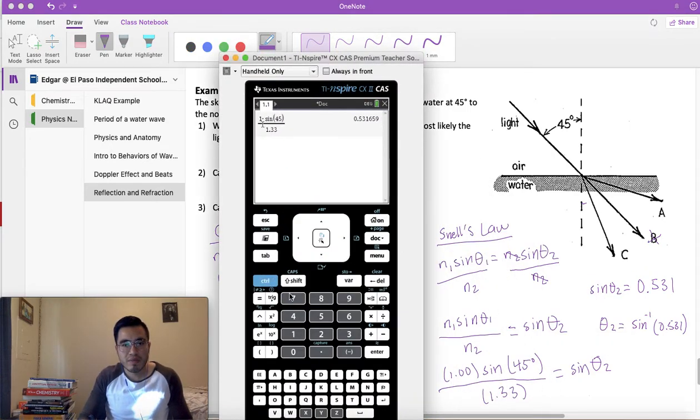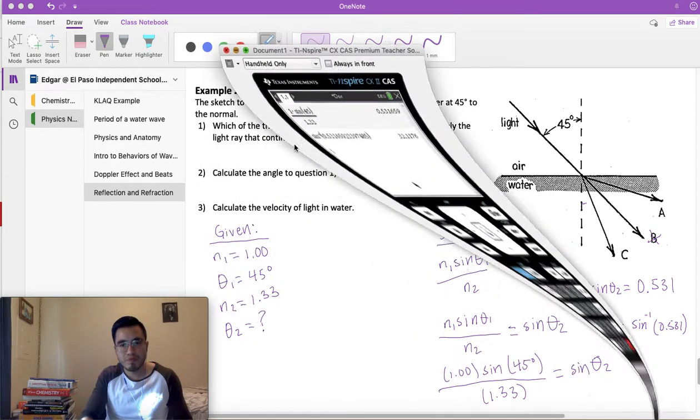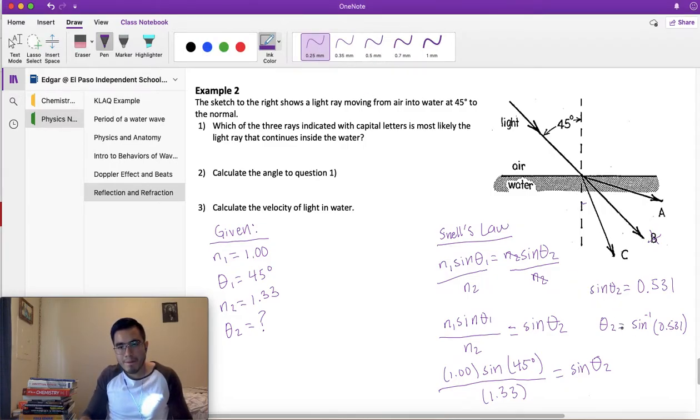So let's do that. Trig functions, you'll see it, sin^(-1). Instead of writing 0.531, I'm just going to select my previous answer by control ANS for answer. Press enter. 32.11. I'm just going to round to 32 degrees. θ2 = 32°. So I'm going to write my answers in blue. θ2 = 32°. This is my angle of refraction.